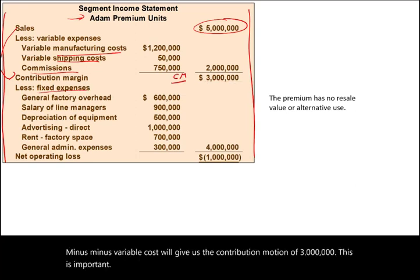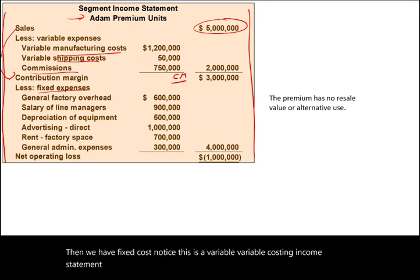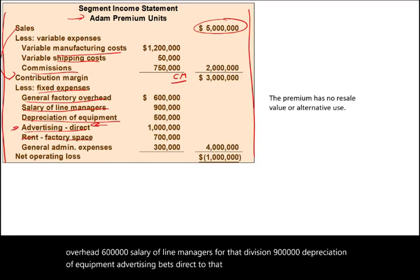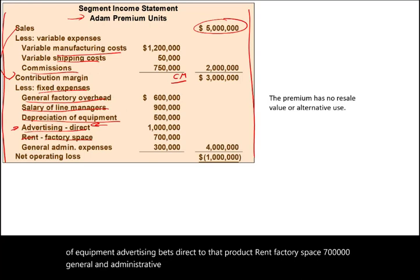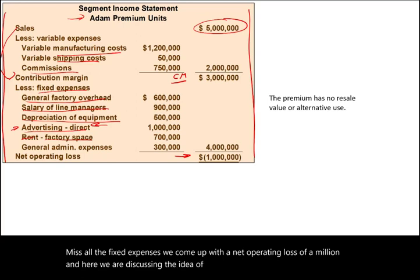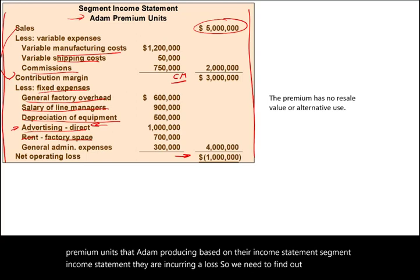This is a variable costing income statement, separating variable cost from fixed cost. Fixed costs include general factory overhead of $600,000; salary of line managers for that division, $900,000; depreciation of equipment; advertising direct to that product; rent for factory space, $700,000; and general and administrative expenses of $300,000 — totaling $4 million. Taking the $3 million contribution margin minus $4 million in fixed expenses gives us a net operating loss of $1 million. We're now discussing whether to close Adam's premium unit.